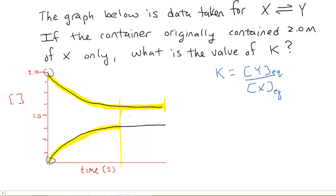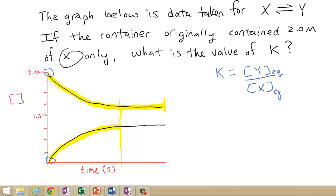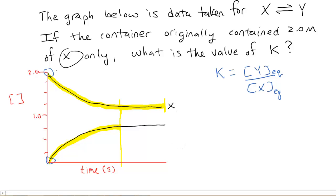So, the first thing we're going to do is we're going to say, the problem told us the container originally contained only X. That means this line right here is X because there's the two molar of X. There's no Y initially in the container. Okay, so I've now identified which graph represents which. So, now to find the concentration of X, all I have to do is back this up and go back across. It looks like it's 1.25. Do you see that?